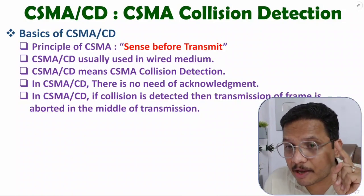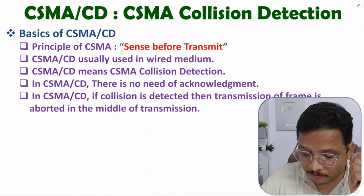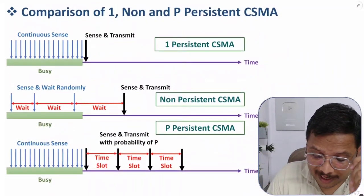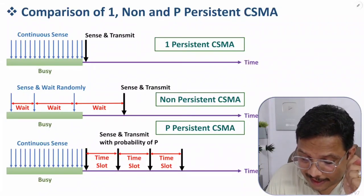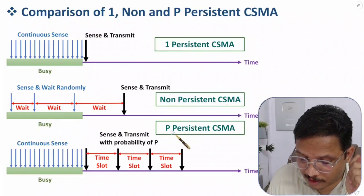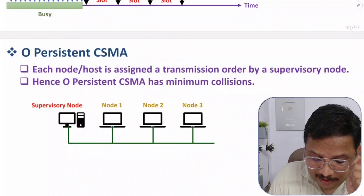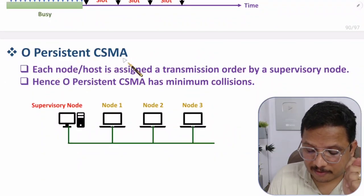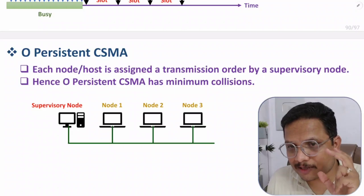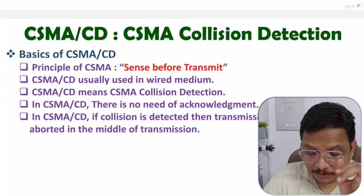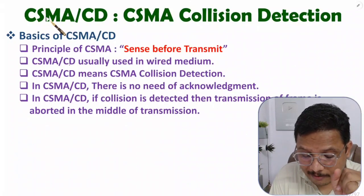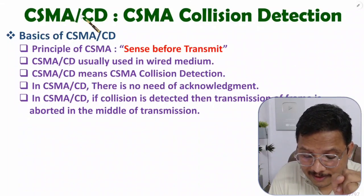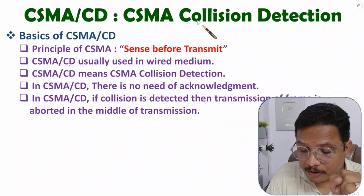CSMA we have already studied in my last video. With CSMA I explained four varieties: first was one-persistent CSMA, second was non-persistent CSMA, third was P-persistent CSMA, and fourth was zero-persistent CSMA. So that we have already studied. Here in this video, the extension of CSMA that I will be explaining is CSMA/CD.